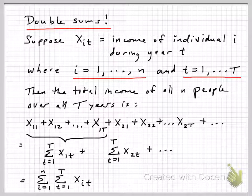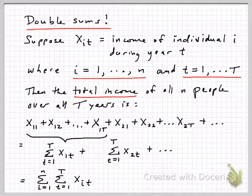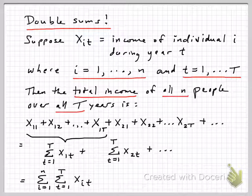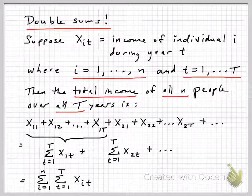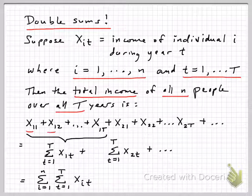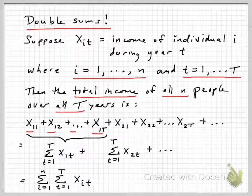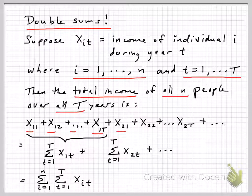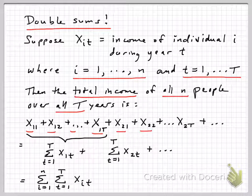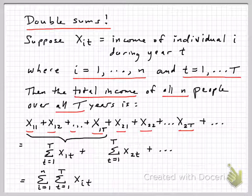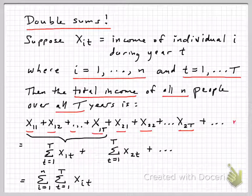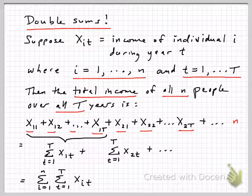So the total income, if we wanted to get the total income of all n people over all big T years, then we would be adding up x11 plus x12 plus x13 and so forth up to x1 capital T. Then we'd have x21 for individual 2 plus their income in period 2, all the way up to x2 big T. And we keep going through all the individuals, 3, 4, 5, all the way up through individual n, right?